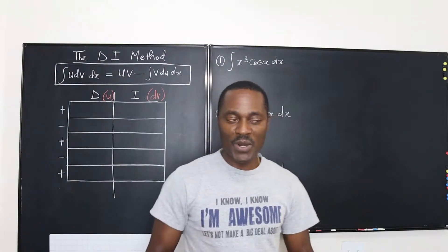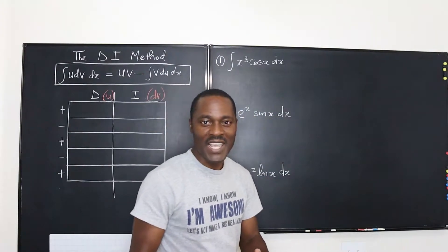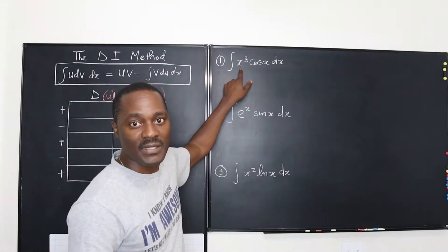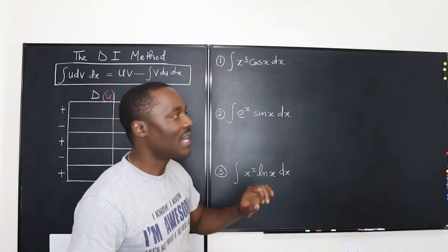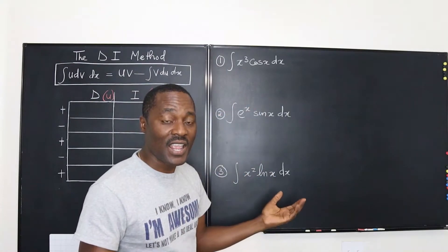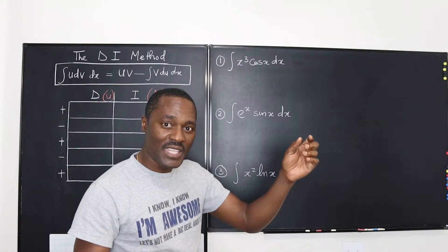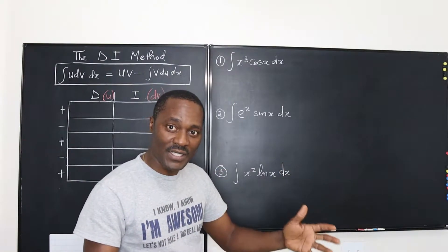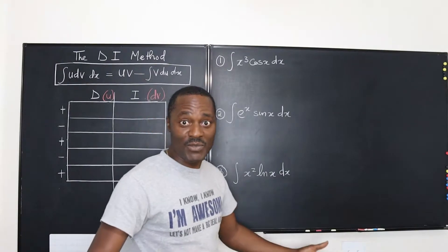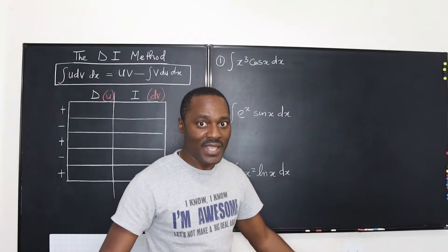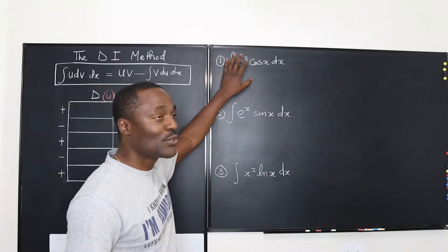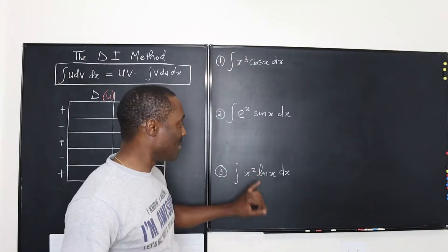One quick suggestion: every time you have a function that contains a polynomial, you want to make sure that you make that polynomial your U, because it's easy to differentiate. As you keep differentiating a polynomial, it keeps getting smaller until you get zero. That brings your work to an end, because by the time you get zero, there's nothing else you're going to do. So every time you have a polynomial, you should always make it your U.